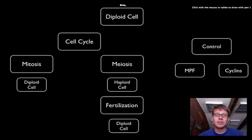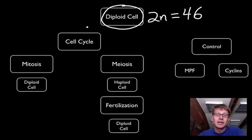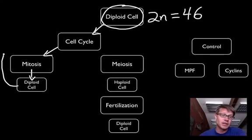A diploid cell is going to be a typical human cell or a typical cell inside an organism. It's going to be 2n, and what that means is it has two complete sets of chromosomes. For example, in humans 2n equals 46. That means we have 46 pairs of chromosomes. The goal of the cell cycle in mitosis is to make a copy of that cell, in other words to make a diploid cell. That diploid cell can enter into the cell cycle again, make more cells and more cells and more cells.